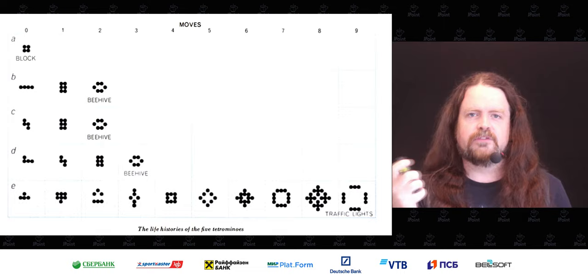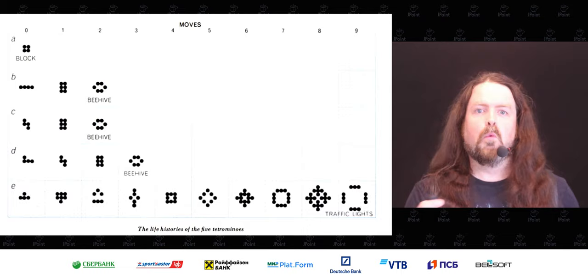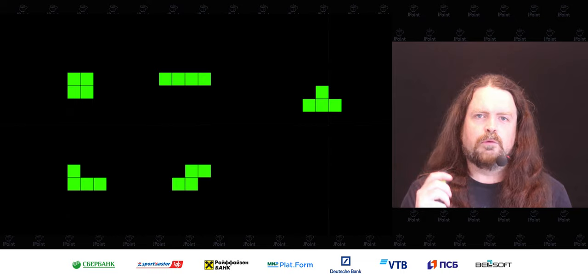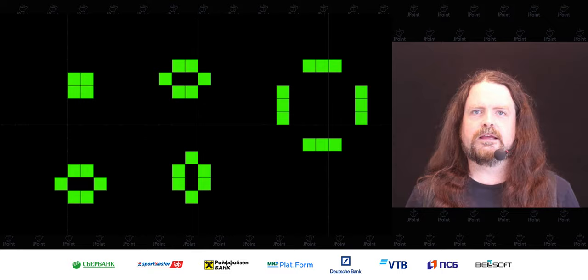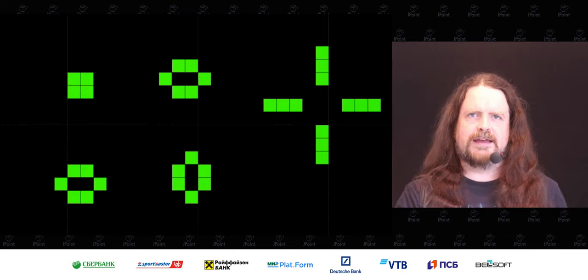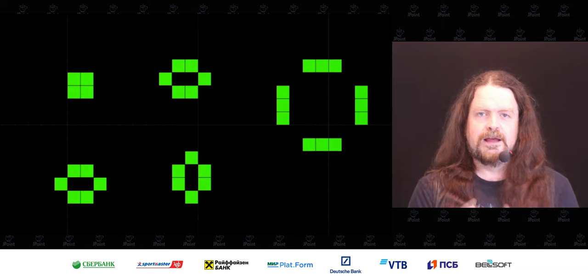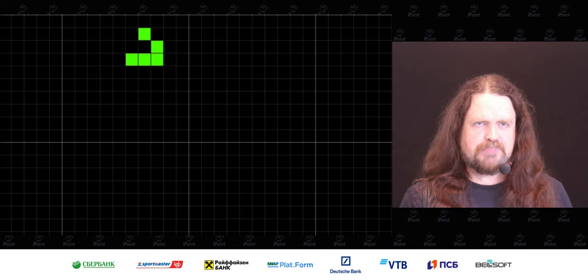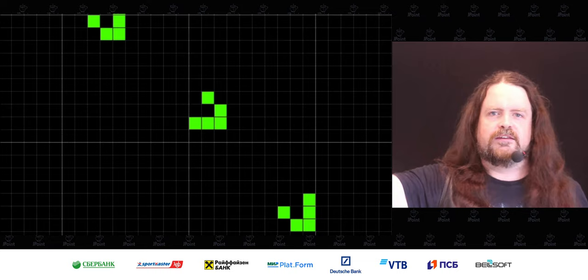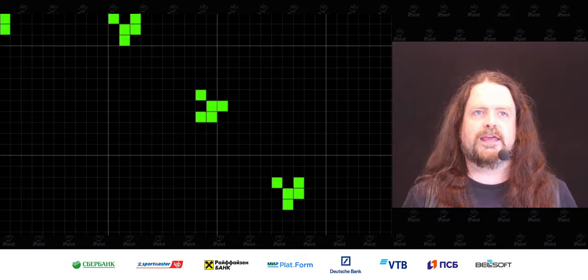It wasn't until we started using computers to explore the Game of Life that we really worked out what John Conway had discovered. We take those five tetrominoes, animate them, and look at what we get. Four of those shapes settle down almost immediately, but one goes for about 10 or 11 generations and then goes into an infinitely repeating pattern. As we started using computers to experiment and explore, people discovered astonishing things — like this shape: the glider, which just glides across the infinite grid, never ending, keeps going.